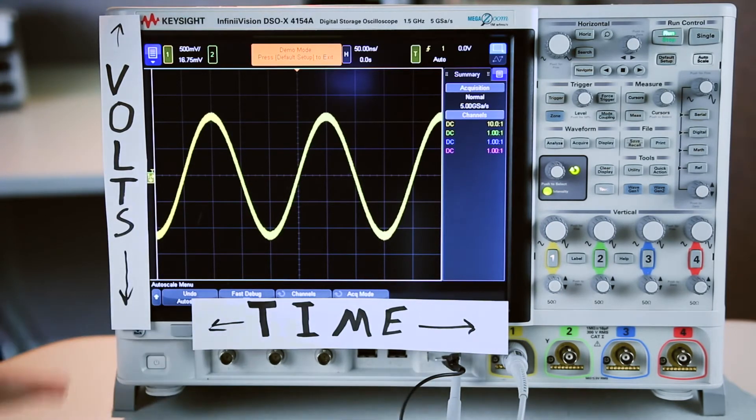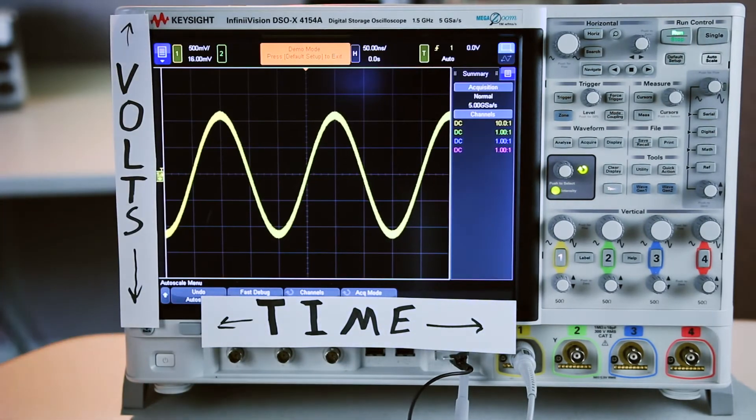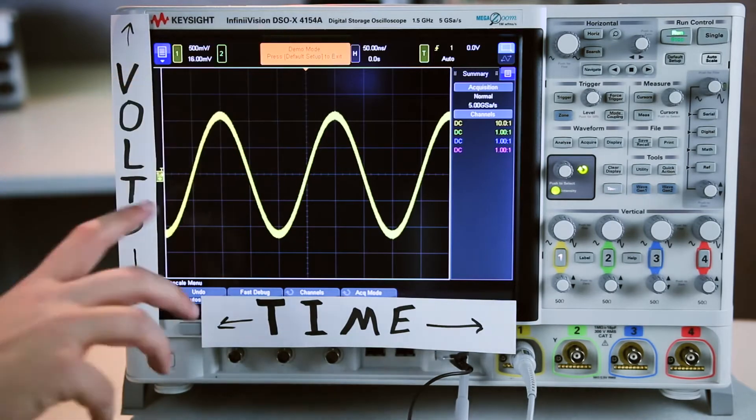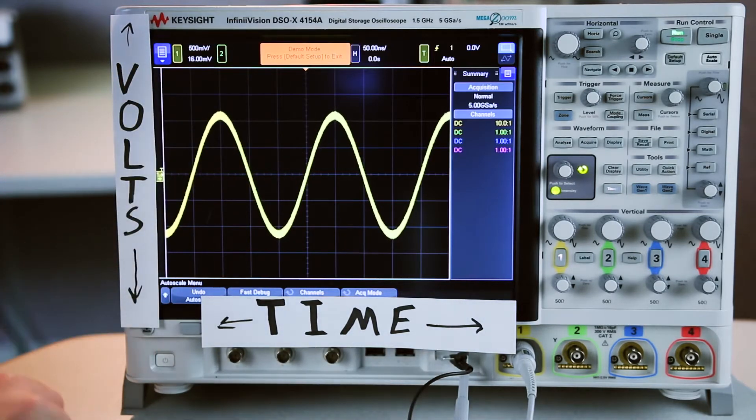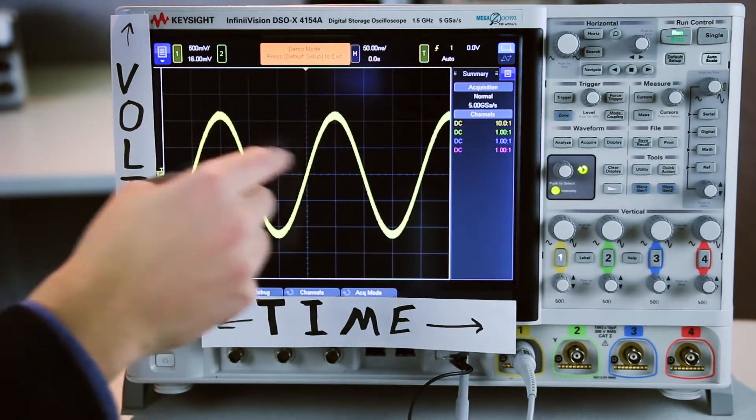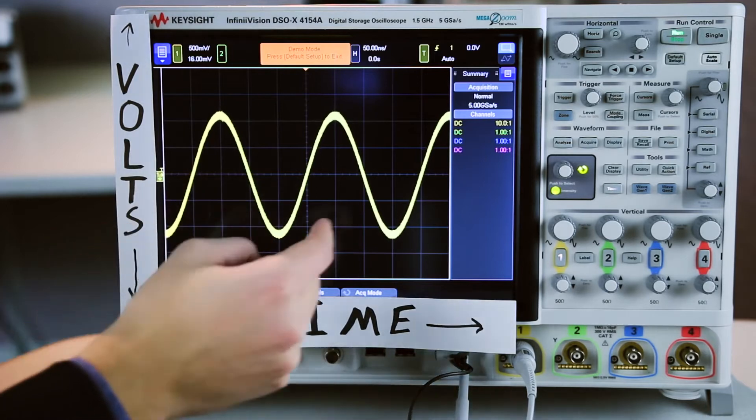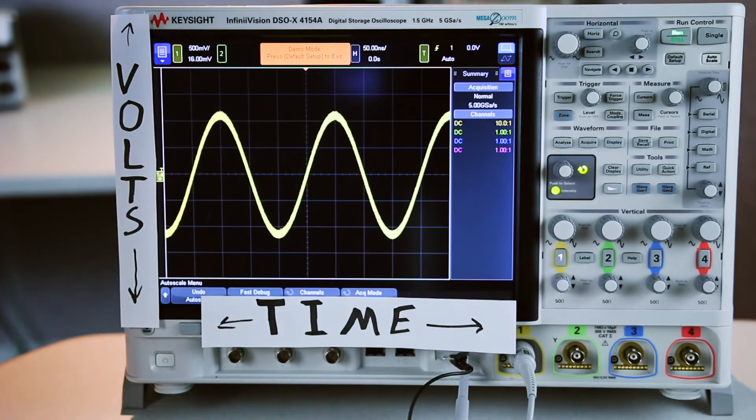Time passes from left to right and volts go from low to high. You'll also notice that I have grid lines vertically and horizontally on the screen. The values up at the top tell me the magnitude of each of those grid lines. So this says 50 nanoseconds horizontally. That means each one of these horizontal grid lines represents 50 nanoseconds in time.